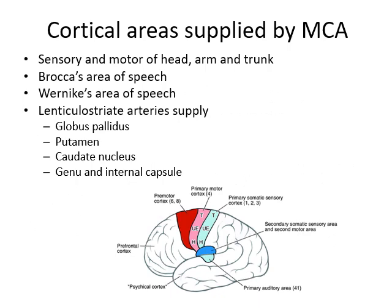The cortical area supplied by the middle cerebral artery includes the sensory and motor areas of the head, arm, and trunk — a large area — and also Broca's speech area and Wernicke's speech area. The lenticulostriate arteries supply deep structures like the globus pallidus, putamen, caudate nucleus, genu, and the internal capsule. The lateral superior lateral surface of the brain is mostly supplied by the middle cerebral. A large number of cortical areas are supplied by the middle cerebral artery, so a major block will give rise to many clinical features — speech will be completely affected and different features will occur according to the level.